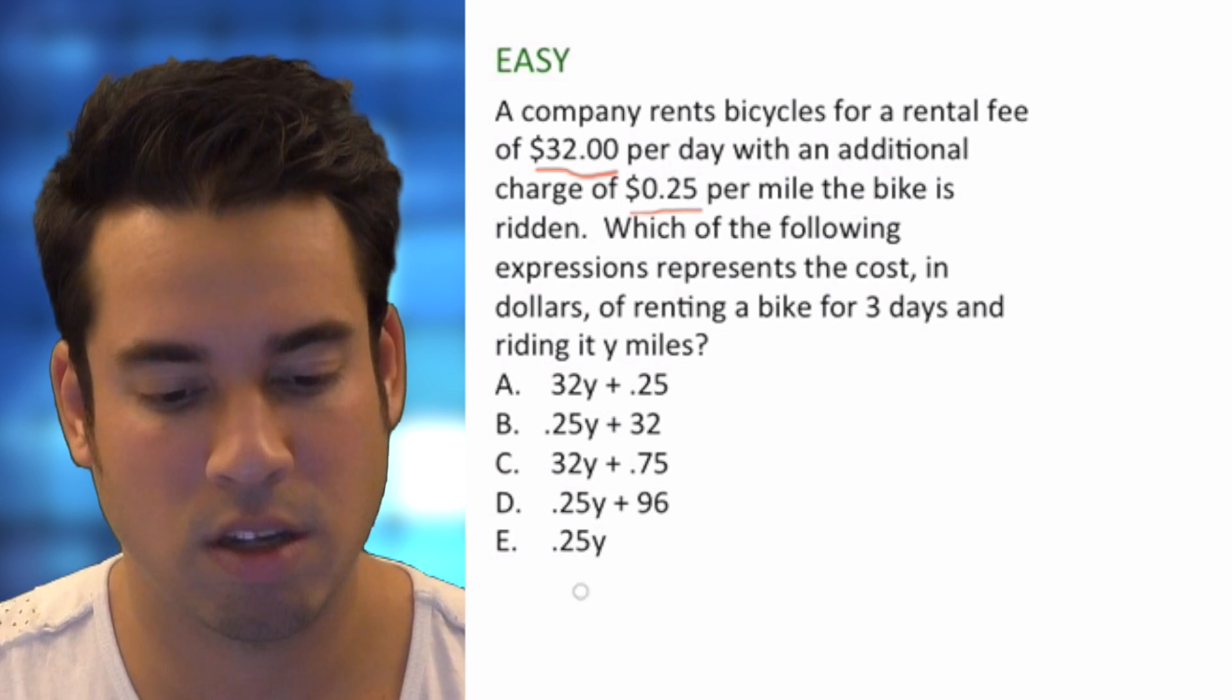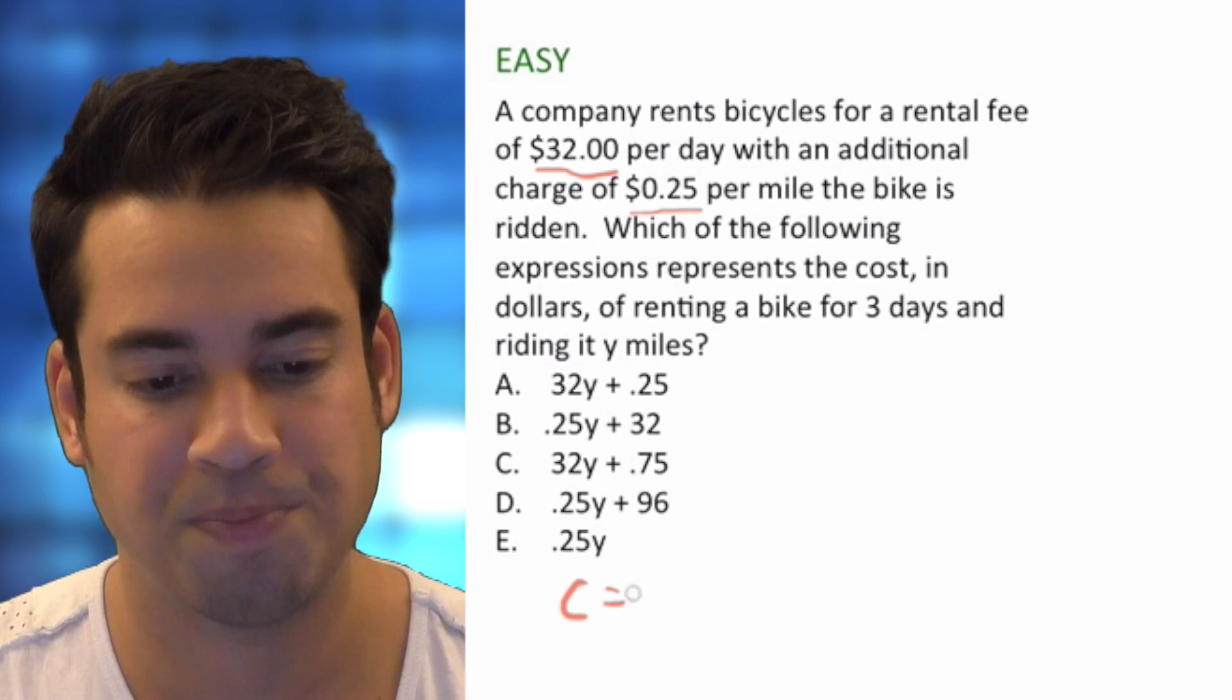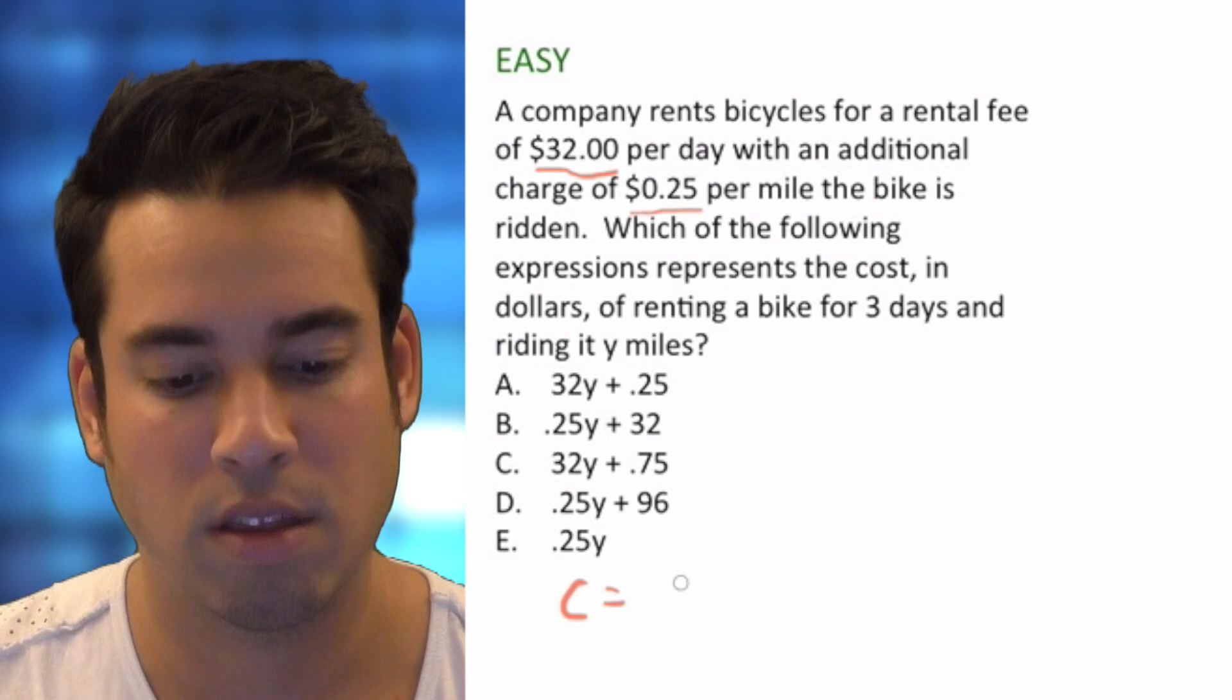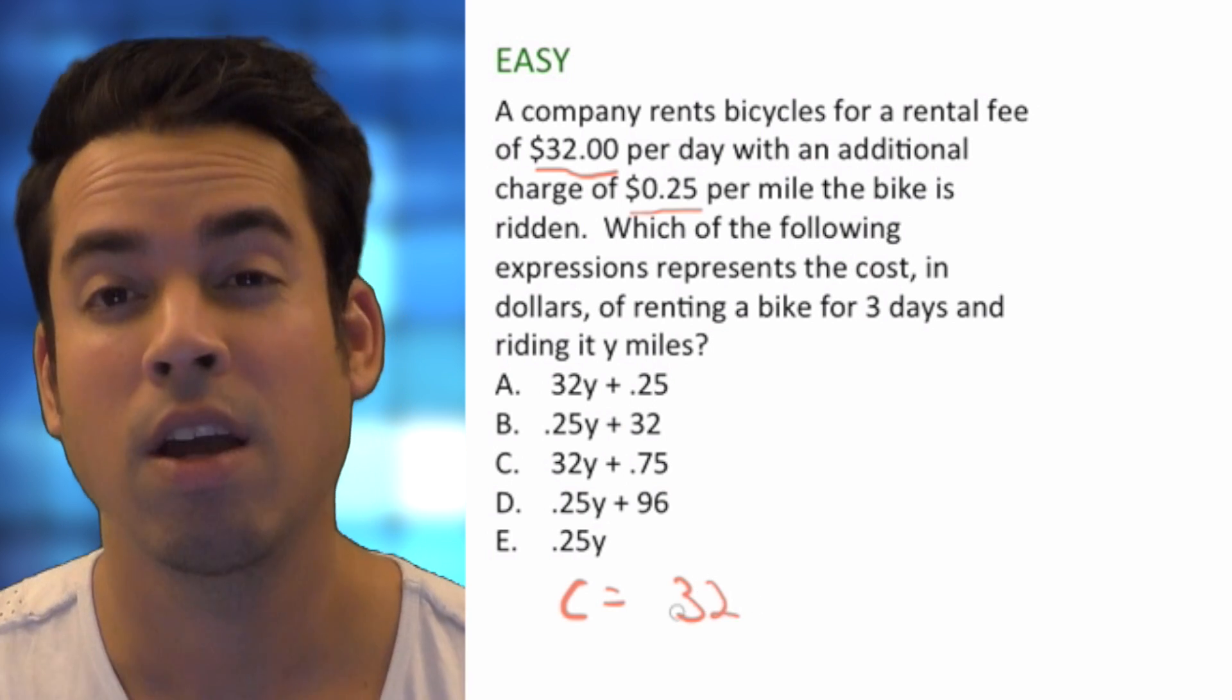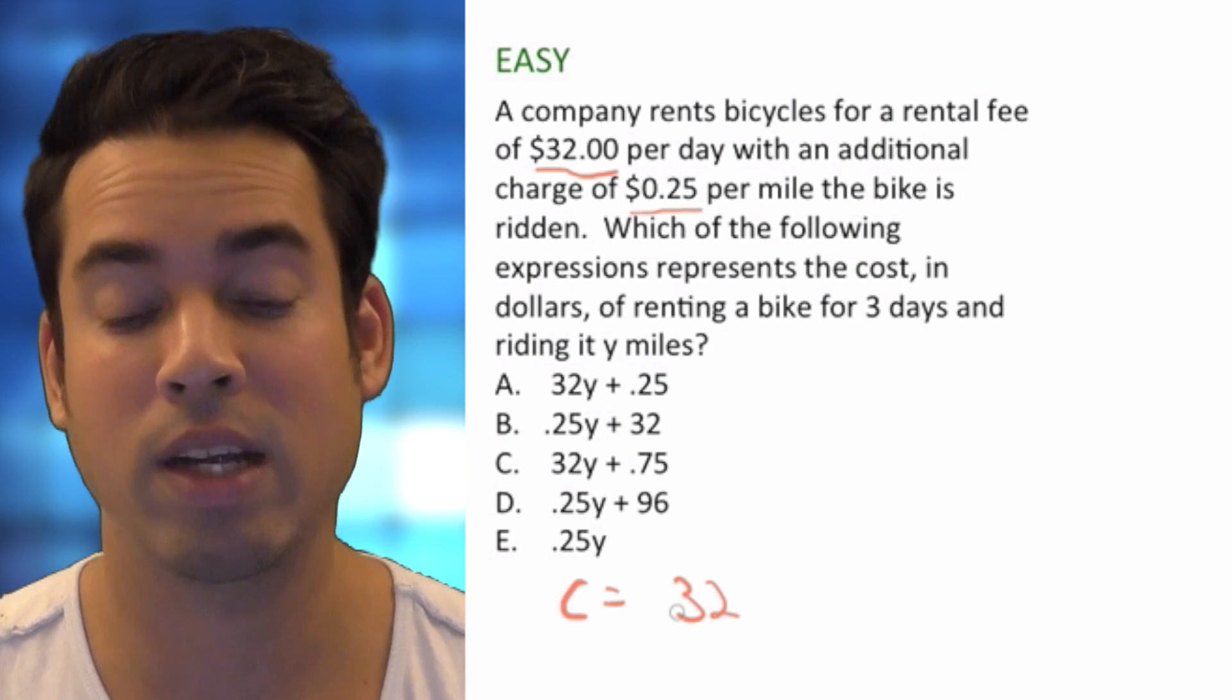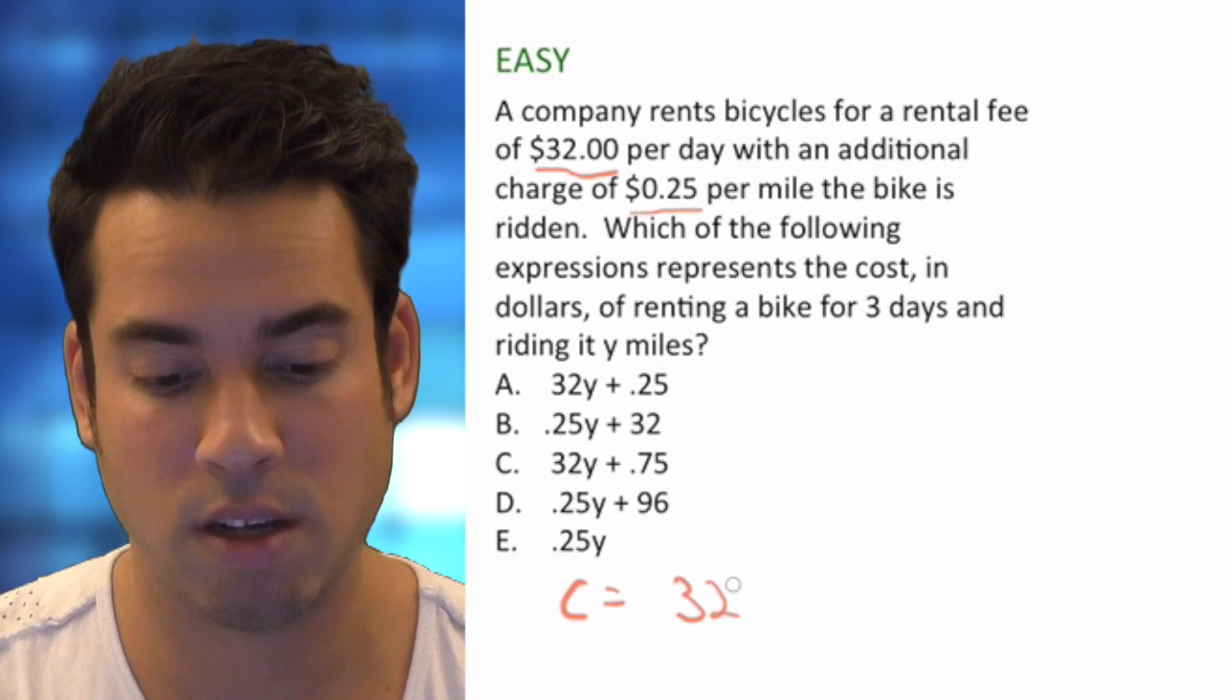So what do we say? So we say the cost equals and we said $32 per day. Okay, so we know it's $32 and we know we're riding it for three days. So it's 32 times three.